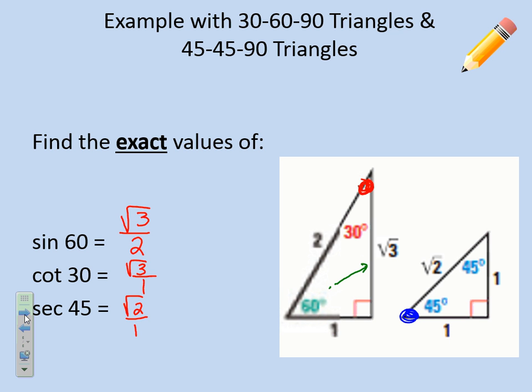Notice the special right triangles here have those same relationships we've been talking about — the hypotenuse is double the short leg for 30-60-90. Let's try to make that connection and bring those things together. Thank you for watching this and taking good notes, and we'll take a look at what we need to do for tomorrow when you come to class.